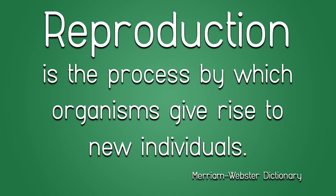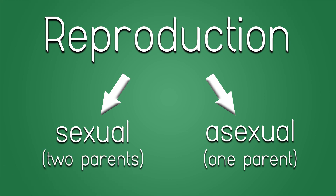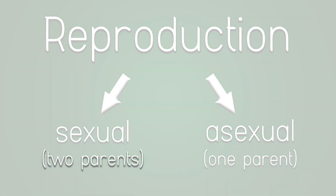The next characteristic we look at is Reproduction. Reproduction is defined as the process by which organisms give rise to new individuals. There are two types: asexual and sexual reproduction. Asexual reproduction requires only one parent and occurs in bacteria, some plants, and some animals. Sexual reproduction is what results in the variation we have as organisms — no two of us are the same unless we are twins. Neither type is better than the other; they each have their pros and cons.